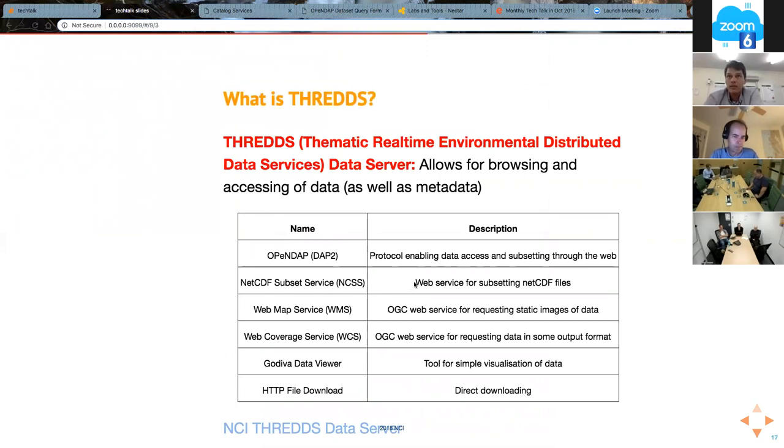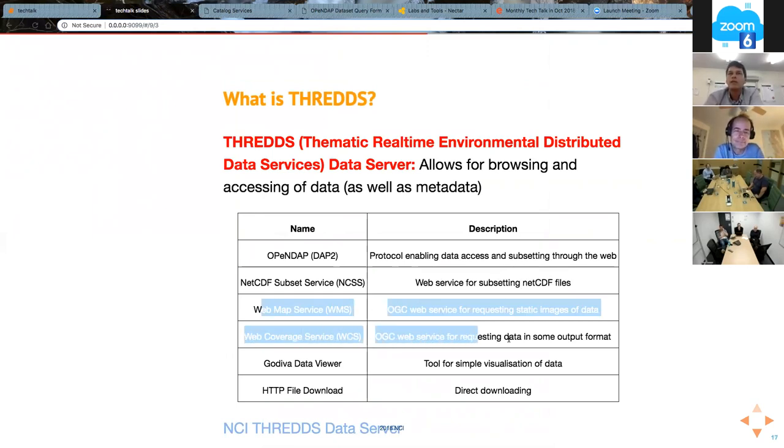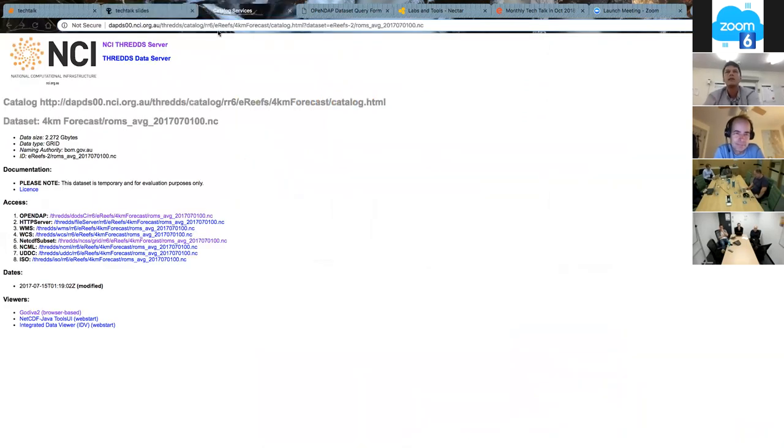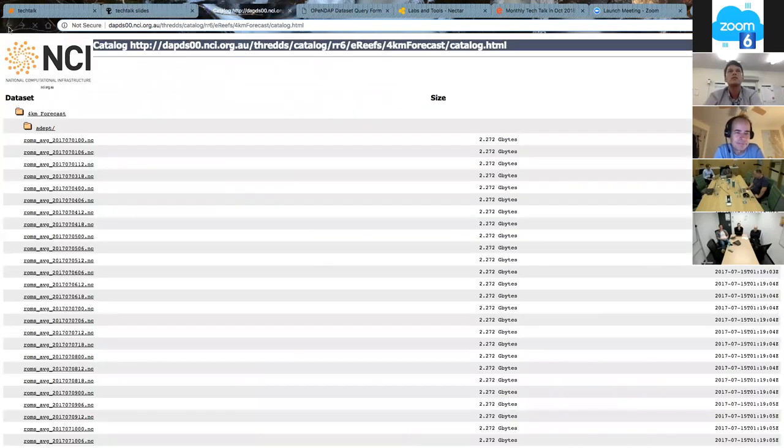NetCDF subset is just a way you can subset the data and potentially use a smaller subset of a larger file. There are some OGC web mapping service and web coverage services. I'll just quickly show you what I mean by the THREDDS data service.